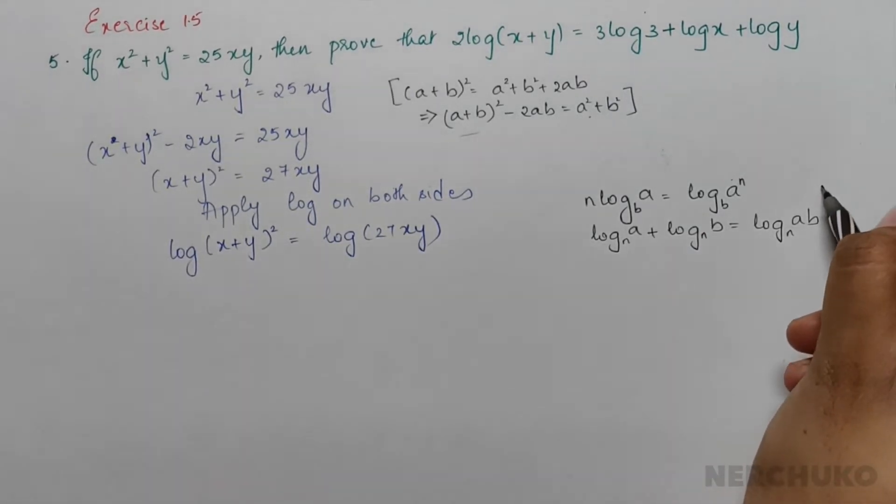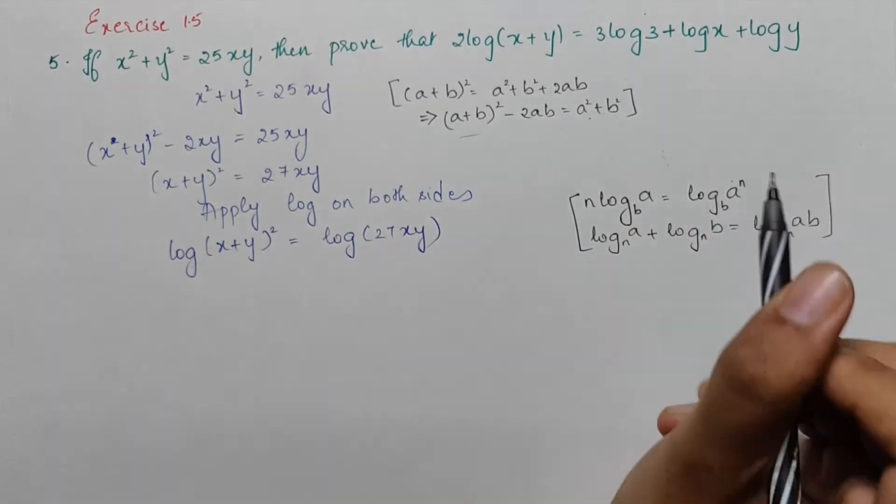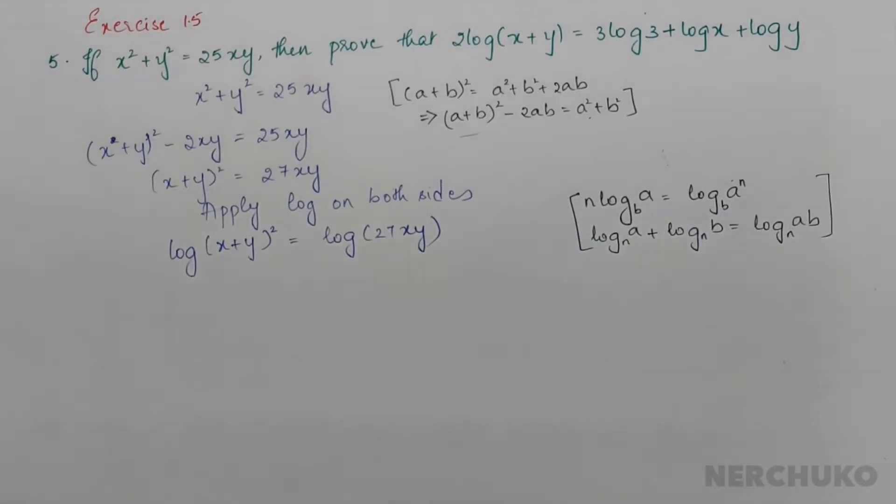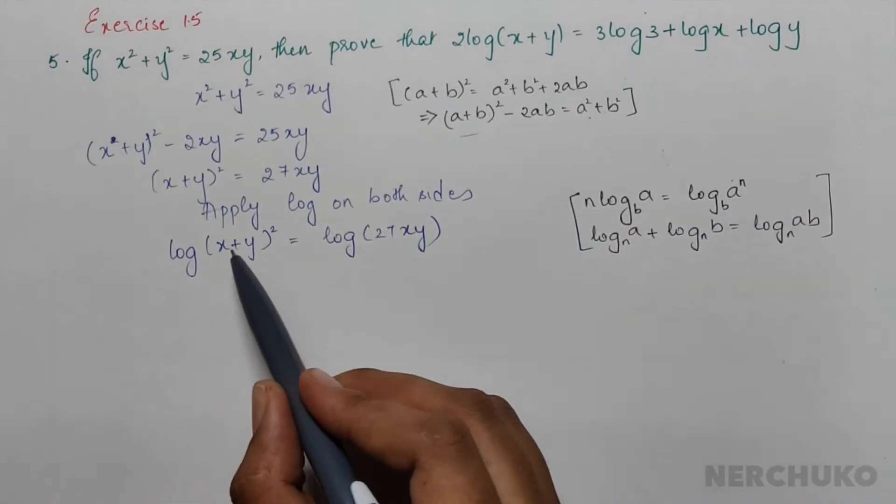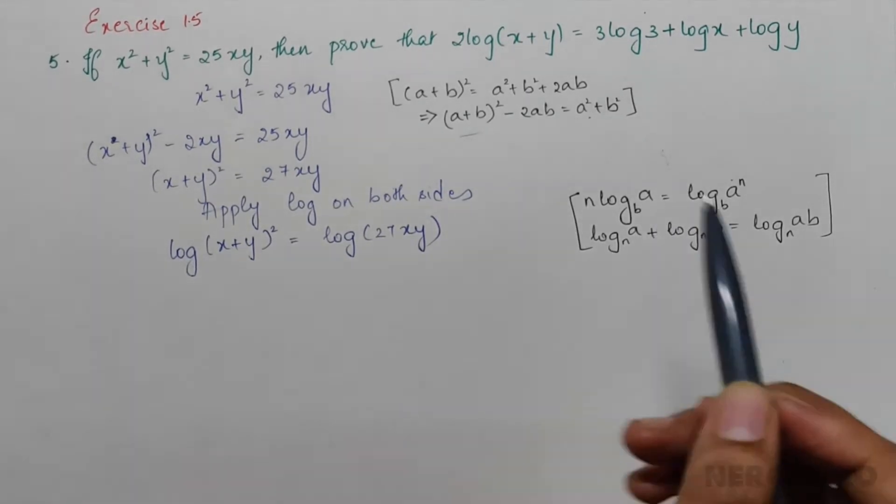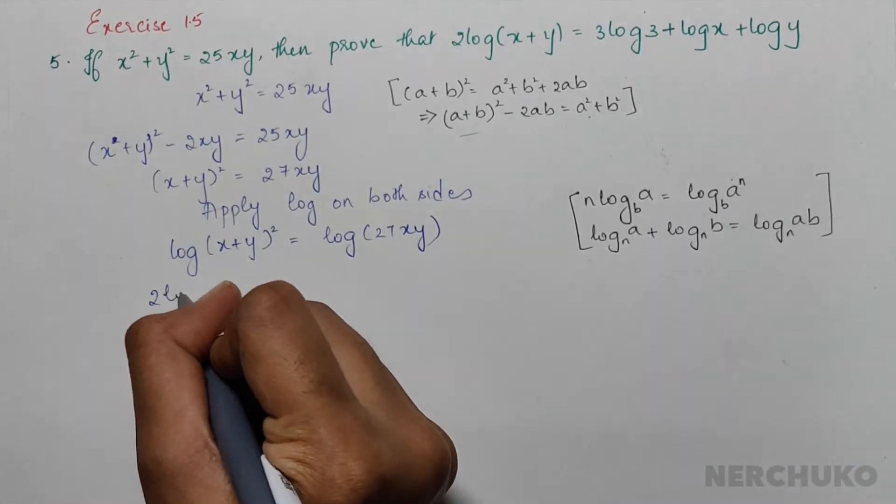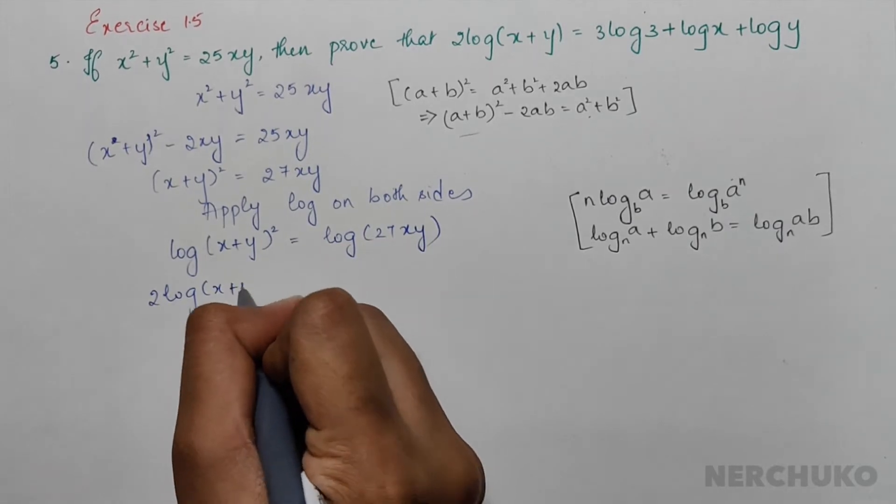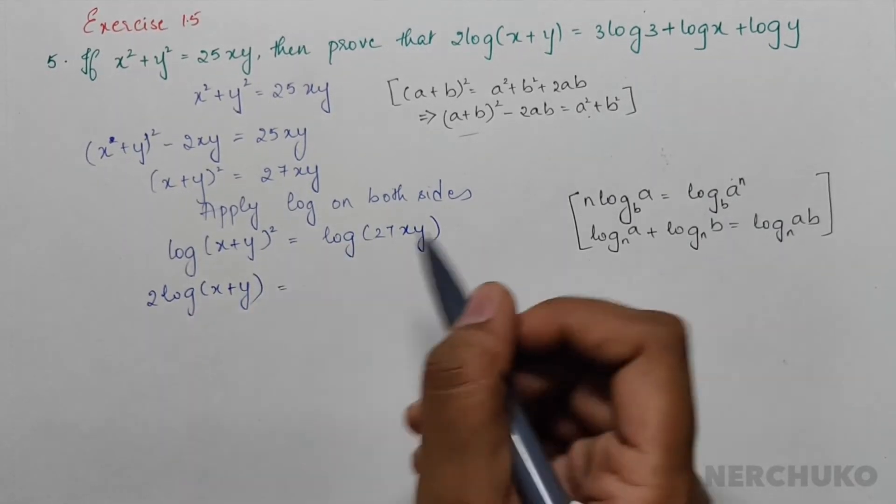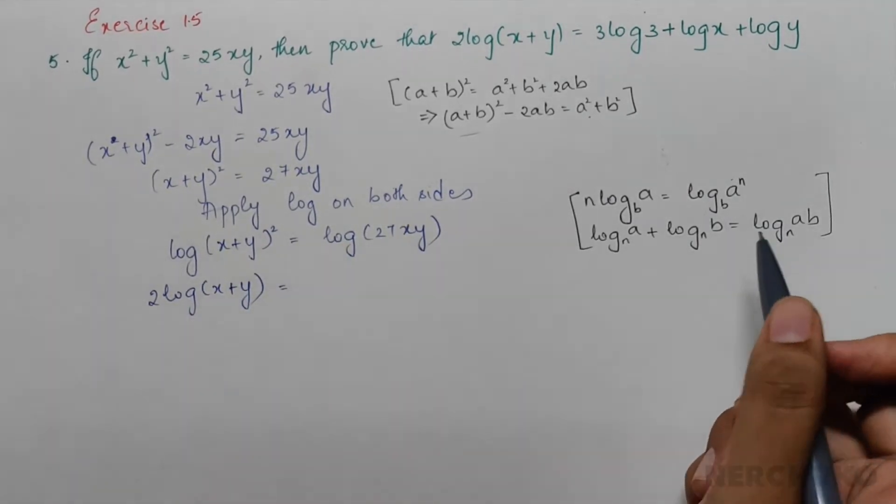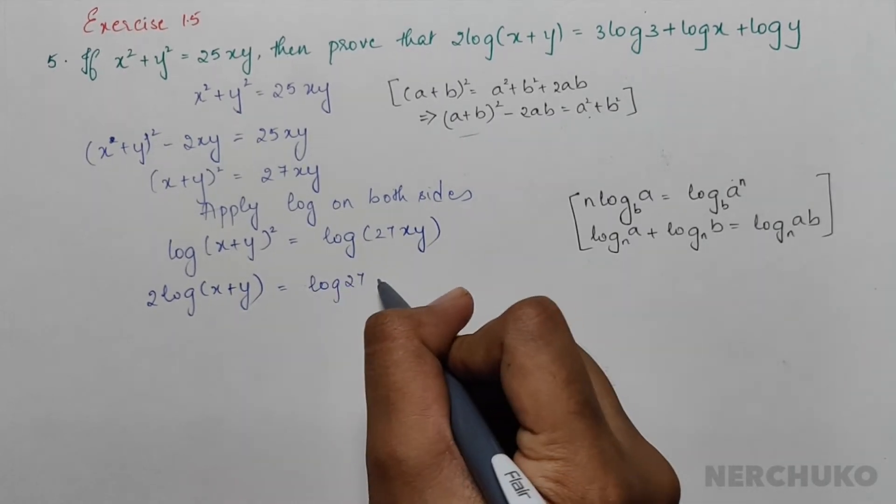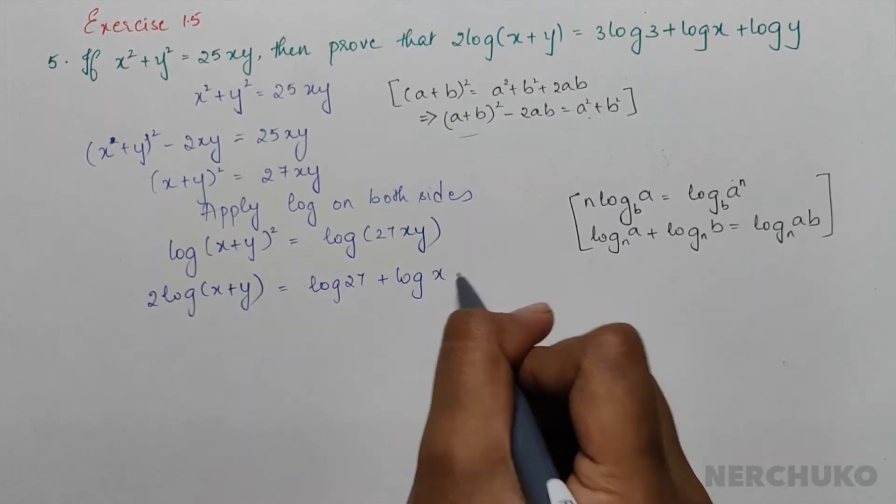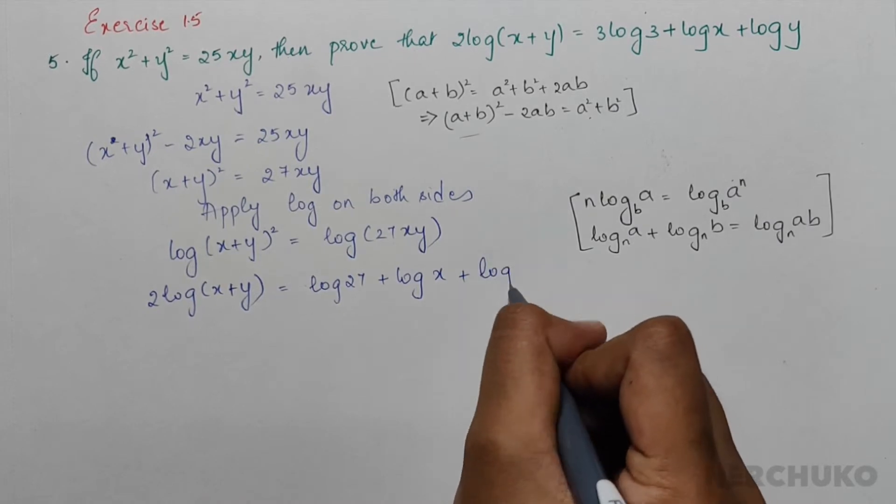Applying these formulas, for the left-hand side I would use the above formula: 2log(x+y). For the right-hand side I would follow the below formula, so I would have log27 + logx + logy.